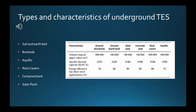Borehole TES systems are often deep, up to hundreds of meters, consisting of a network of tubes inserted into boreholes drilled into the ground. These permit heat or cold to be transferred into underground soil and rock for storage and subsequent recovery. Borehole heat exchangers are manufactured, installed, and operated in a relatively standardized manner today.